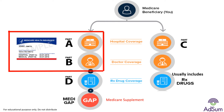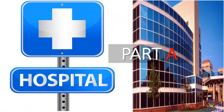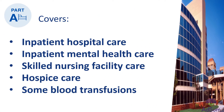Let us start with understanding what Original Medicare Part A and Part B covers. Part A covers inpatient hospital care, inpatient mental health care, skilled nursing facility care, hospice care, and some blood transfusions.